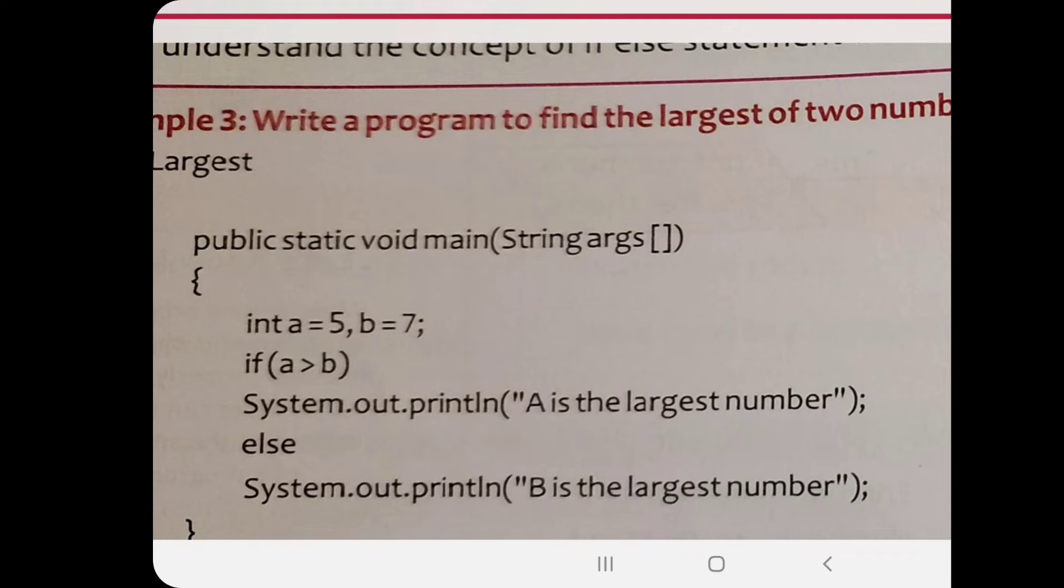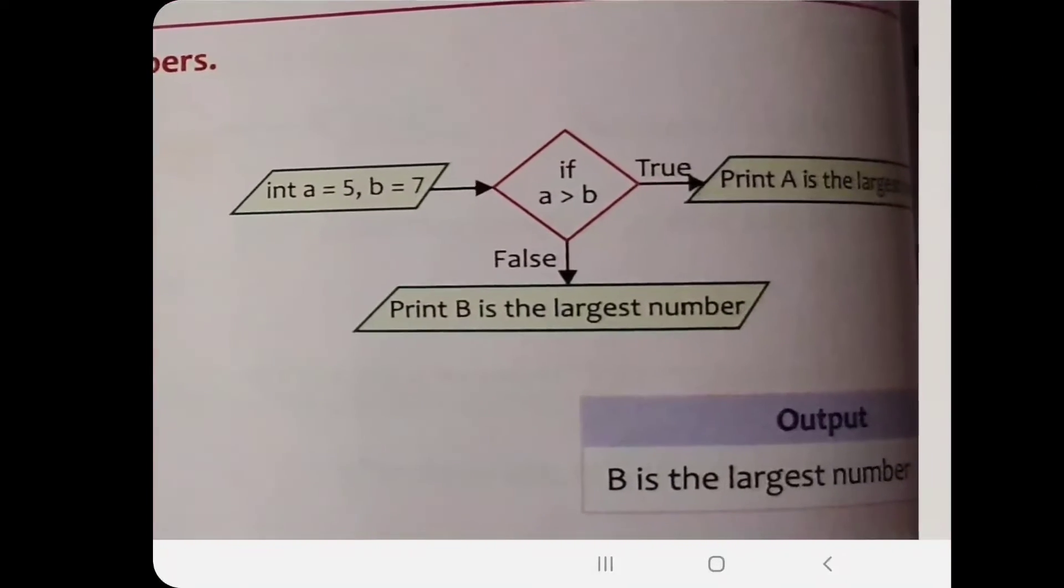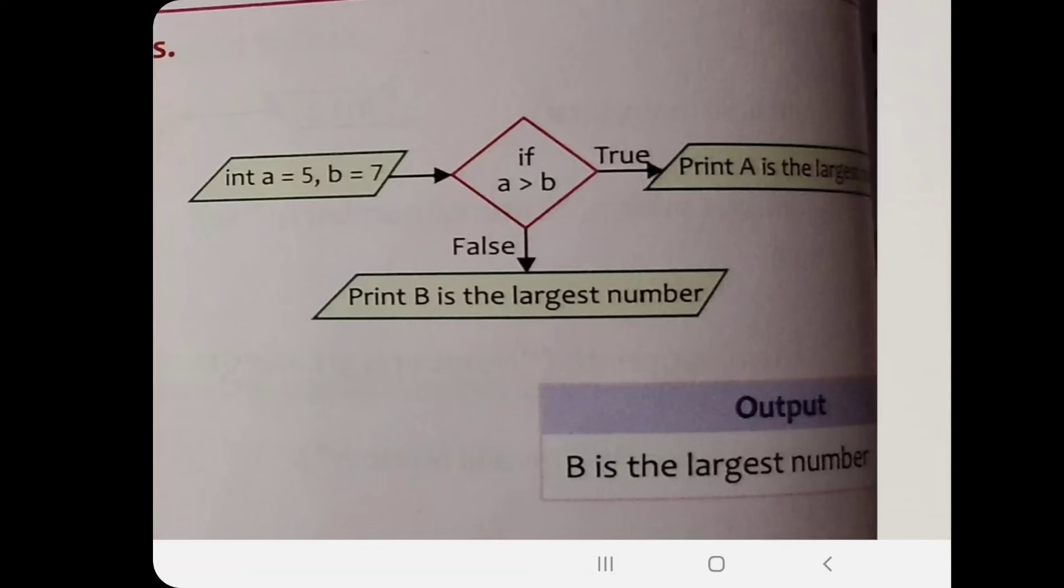Now you see the structure of the program. We have written if a is greater than b in a decision box, and both sides we have true and false options. You can see input is taken, decision box is taken, print a is largest, and print b is largest. These two outputs—one of them is correct. One more thing: you can write the program in any form, horizontal or vertical. Do not confuse for these small things.